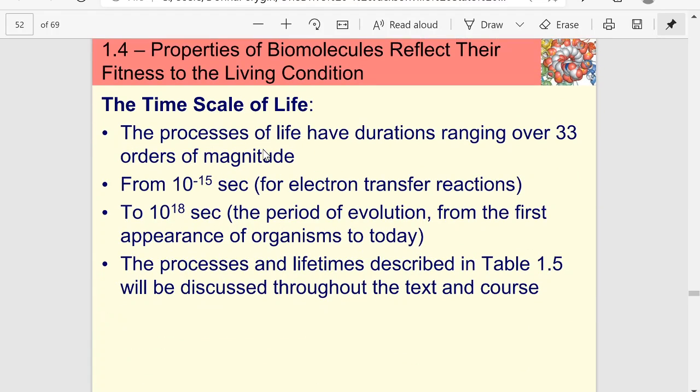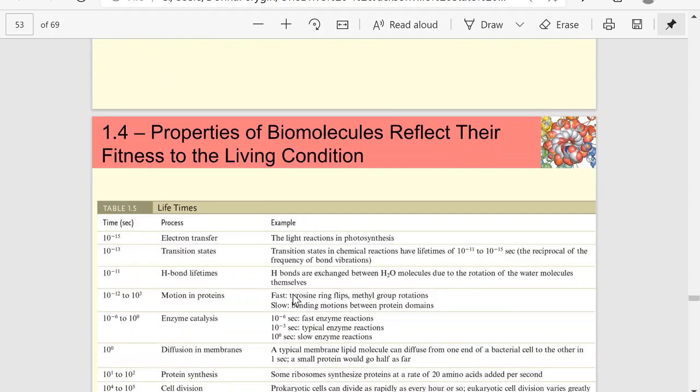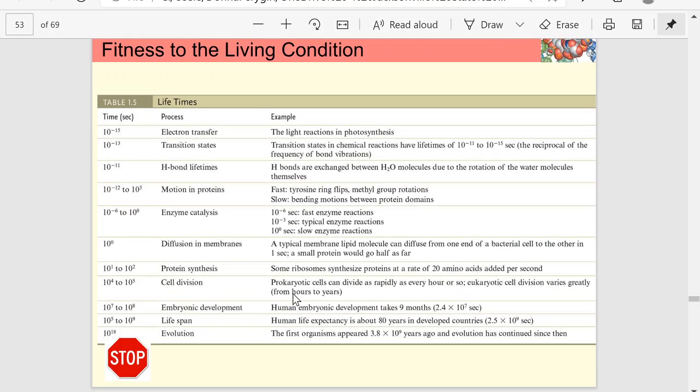So, how long do these processes last? What's the time scale for biological processes? Well, it could be anywhere from 10 to the negative 15 seconds, which is very fast for electron transfer reactions, to 10 to the 18 seconds if you consider the period of evolution. But let's look at what normal processes like this take.